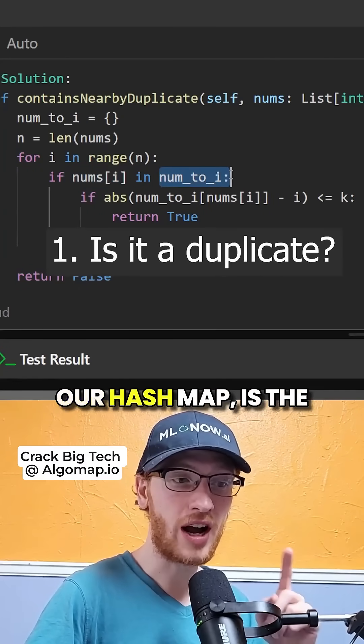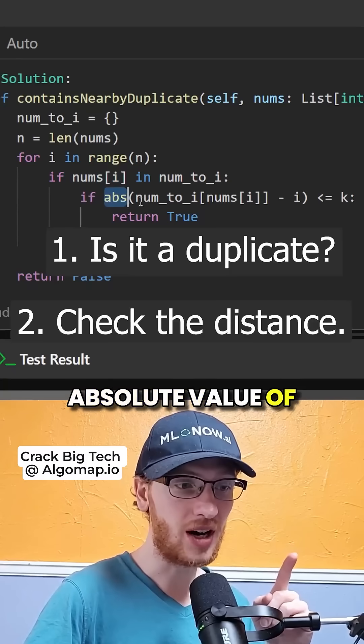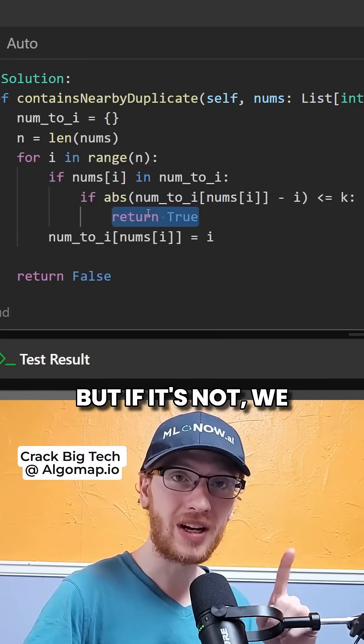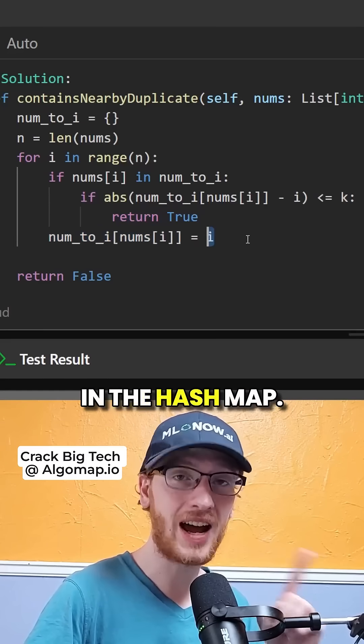So if the current number is already in our hash map, is the absolute value of the difference between the two indices less than or equal to k? But if it's not, we need to store our current number in the hash map.